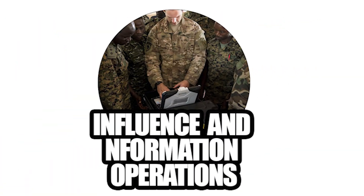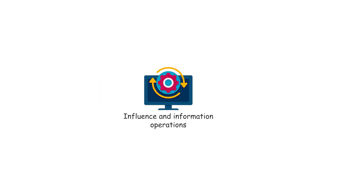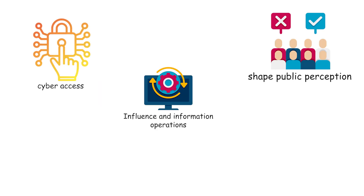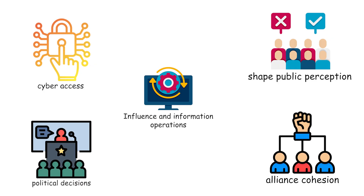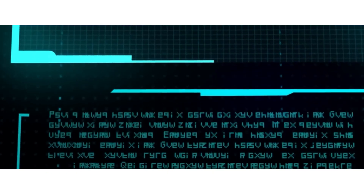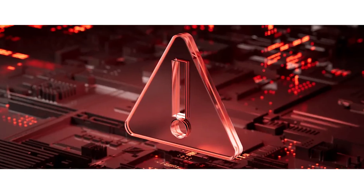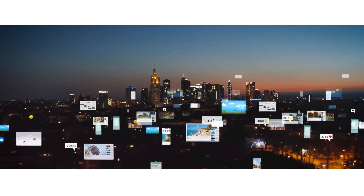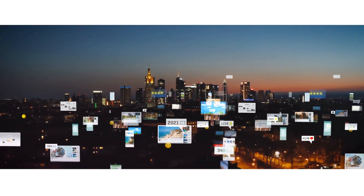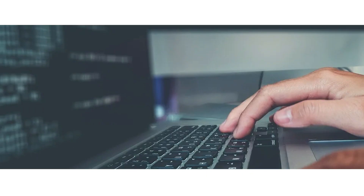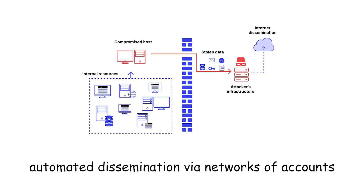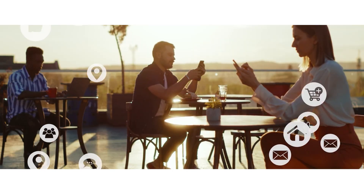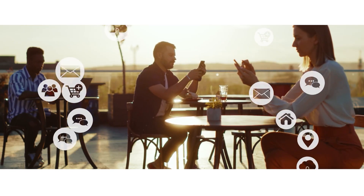Influence and information operations exploit cyber access to shape public perception, political decisions, and alliance cohesion. This level combines intrusions with deliberate disclosure, targeted leaks, and coordinated social media campaigns to amplify political effects. Execution blends theft of documents or communications with staged releases timed for maximum effect, automated dissemination via networks of accounts, and tailored messaging to specific demographic or elite audiences.